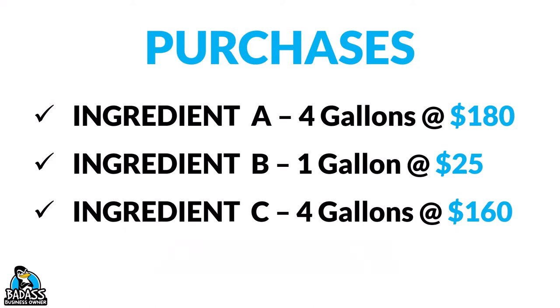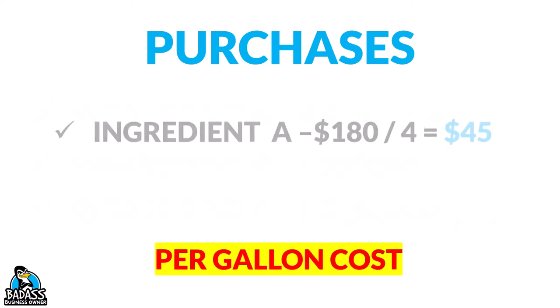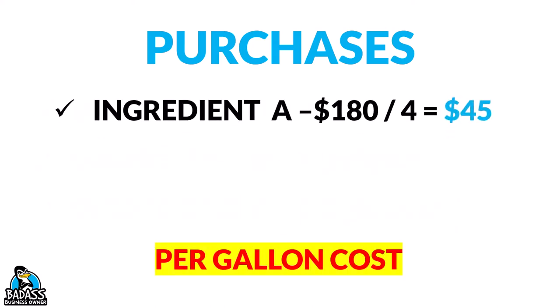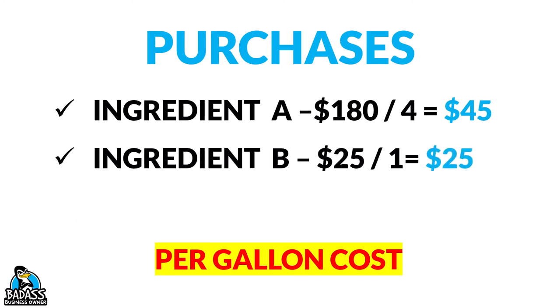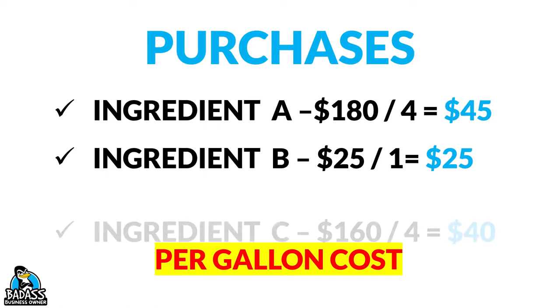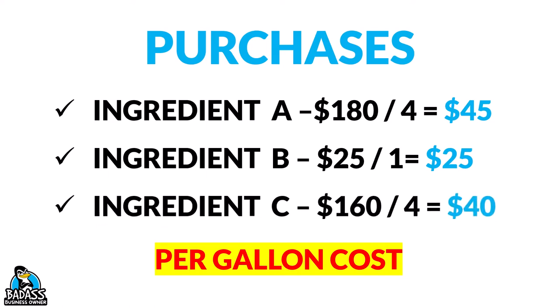We need to break this down by the gallon. Ingredient A: we take $180 divided by four, which tells us it's $45 a gallon. Ingredient B: we only had one, so it's still $25. And Ingredient C divided by the four-pack gives us $40 a gallon.